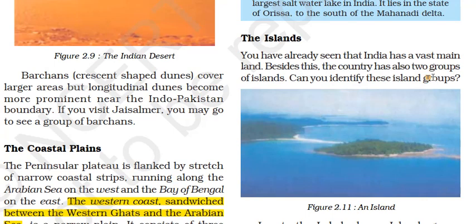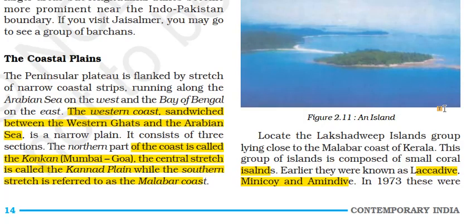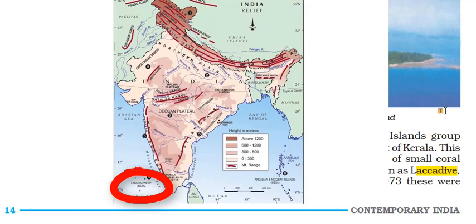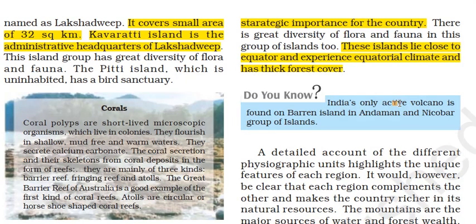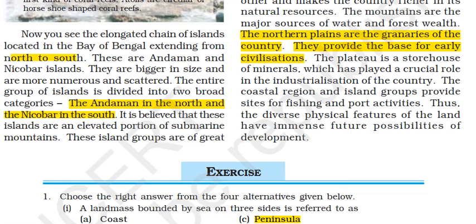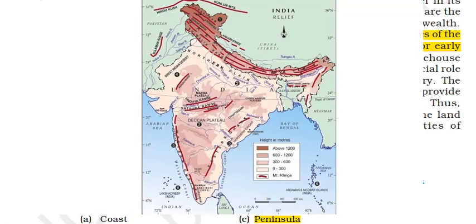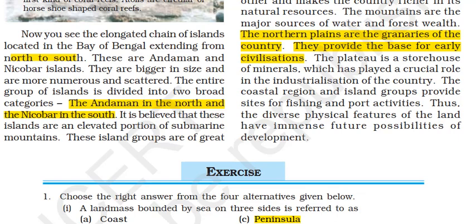India has two groups of islands. One is the Andaman-Nicobar group, which lies in the Bay of Bengal. The other is Lakshadweep, which lies in the Arabian Sea. The Lakshadweep group is composed of small coral islands. Earlier they were known as Laccadive, Minicoy and Aminidivi. In 1973 they were renamed Lakshadweep. They cover a small area of about 32 square kilometers, and Kavaratti island is the administrative headquarters.